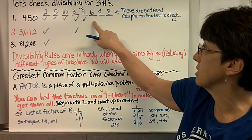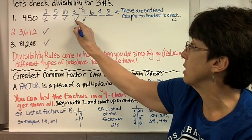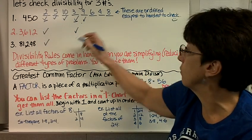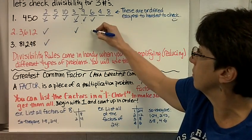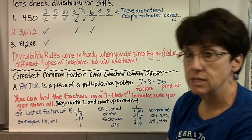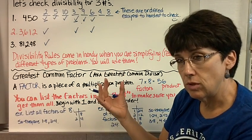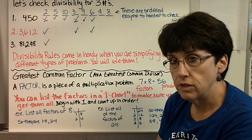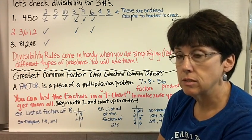So now let's check 6. In order for 6 to work, 2 has to go into it and 3 has to go into it. So does 2 and 3 go into both 450? Yep. Does 2 and 3 both go into 3,612? Yep. 2 goes into this number, but 3 doesn't, so that means 6 doesn't. So I'm kind of going through this a little bit fast. You need to be looking at your divisibility notes, but we're going to do these in class, so this isn't your only chance.